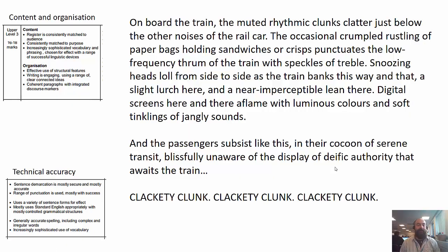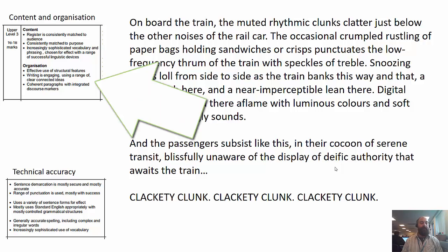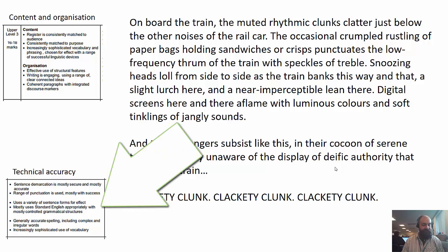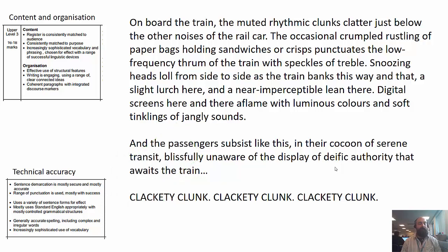As you can see, I've got the criteria that the examiner will use to mark your work. I've got the criteria for the content and organisation of the writing on the top left here, and this is a band 3 level — a good level, sort of a grade 5 or 6. On the bottom left I've got the criteria for technical accuracy, so things like spelling, punctuation and grammar. I'm going to show you how I've achieved each of those points in the piece of writing.